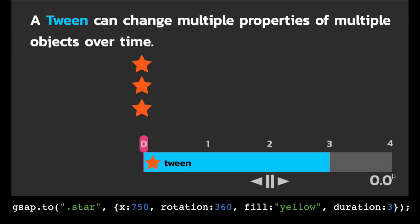This is where it gets cool. A tween can change multiple properties of multiple objects over time. Here we're not changing the code too much. We're still selecting anything with a class of star. It's just that now I have three elements on my page that have a class of star. So this single tween is going to be able to control all of them. You'll see that they're running perfectly in sync. Whenever the playhead advances, it updates the properties on all three targets.